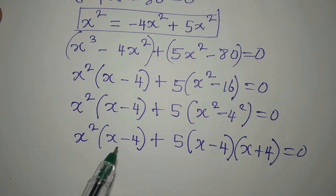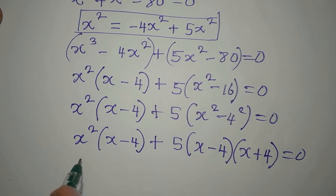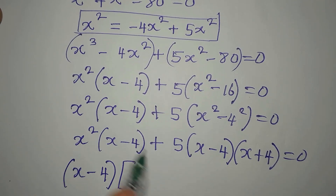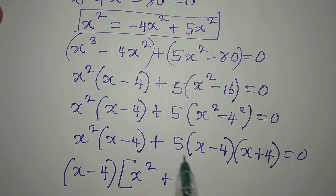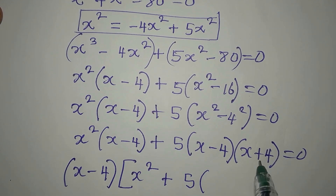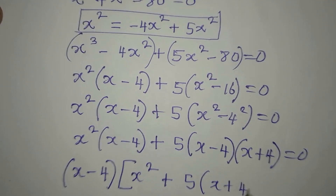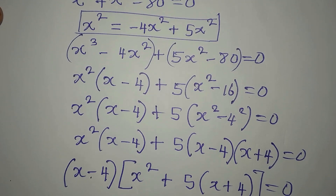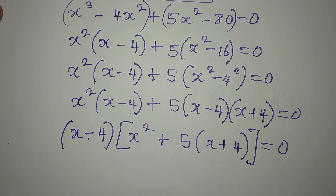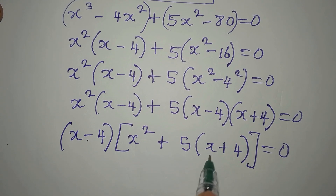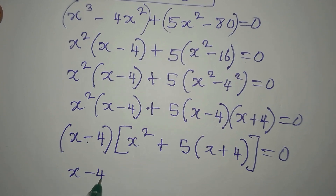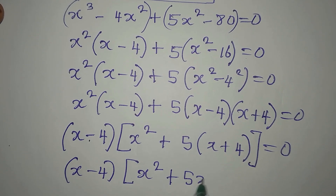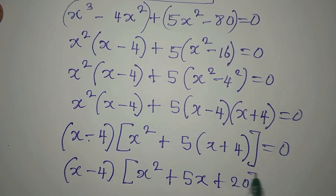Now we have the common factor (x - 4), which comes out as a common factor. So we get (x - 4) times [x² + 5(x + 4)] = 0. Opening the inner bracket, we have (x - 4)(x² + 5x + 20) = 0.